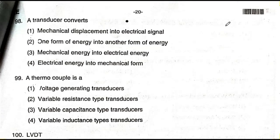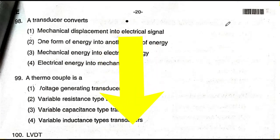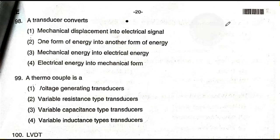Question number 98: A transducer converts — option one: mechanical displacement into electrical signal; option two: one form of energy into another form of energy; option three: mechanical energy into electrical energy; option four: electrical energy into mechanical form. The answer is option two — one form of energy into another form of energy. A transducer converts one form of energy into another form.